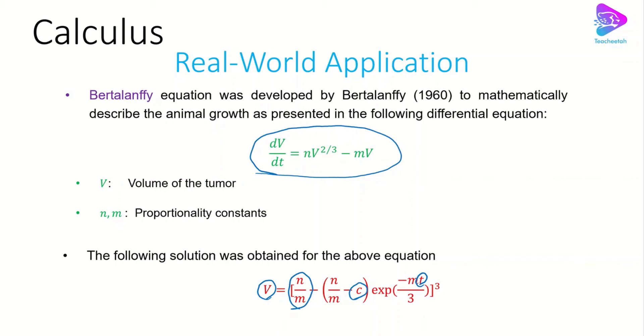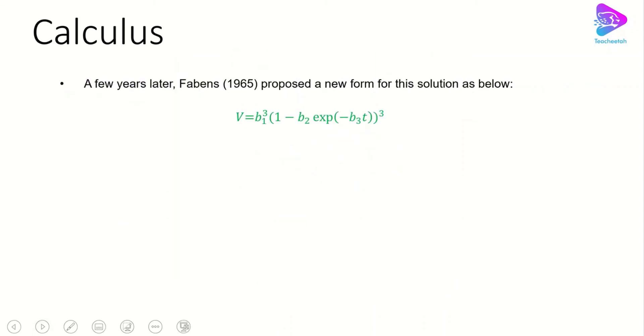Five years later, Fabens (1965) proposed a new form for this solution: v = b1³(1 - b2·exp(-b3·t))³. As you can see, we have the constants b1, b2, and b3.